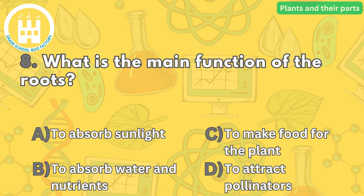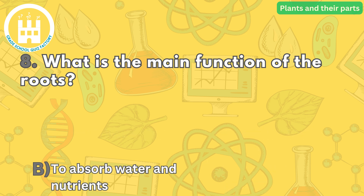Question number eight: what is the main function of the roots? The correct answer is letter B — to absorb water and nutrients. The roots of a plant anchor it in the soil and absorb water and nutrients that are necessary for its growth.